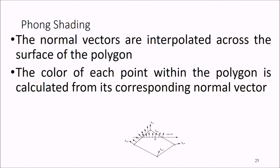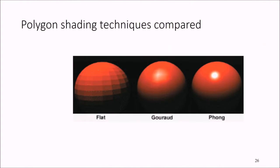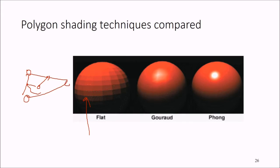Then Phong shading — the normal vectors are interpolated across the surface of the polygon, and the color of each point within the polygon is calculated from its corresponding normal vector. So: flat shading calculates color at the center; Gouraud at the vertices; and Phong finds the normal at each point and then distributes color.